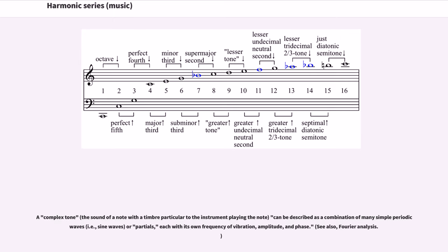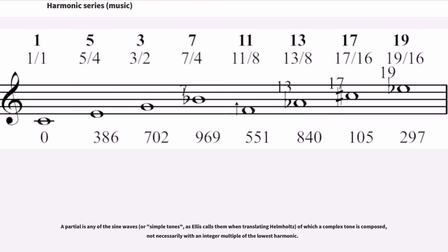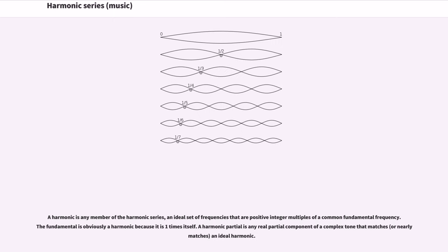A complex tone, the sound of a note with a timbre particular to the instrument playing the note, can be described as a combination of many simple periodic waves, sine waves or partials, each with its own frequency of vibration, amplitude, and phase. A partial is any of the sine waves, or simple tones as Ellis calls them when translating Helmholtz, of which a complex tone is composed, not necessarily with an integer multiple of the lowest harmonic.